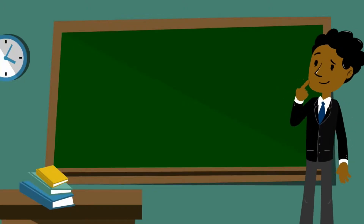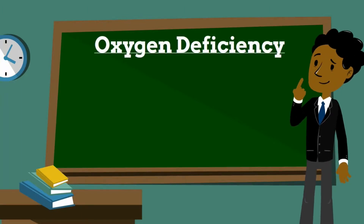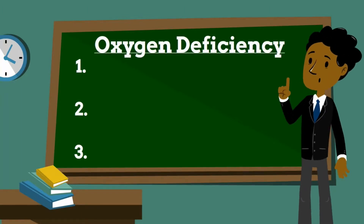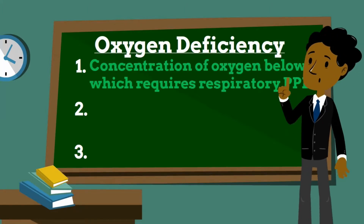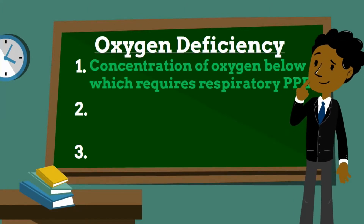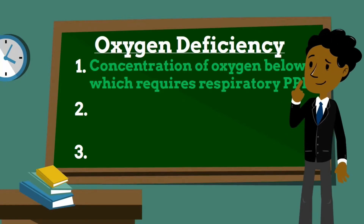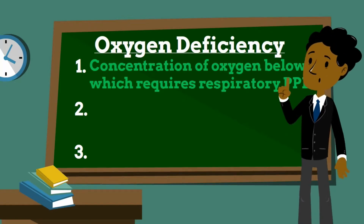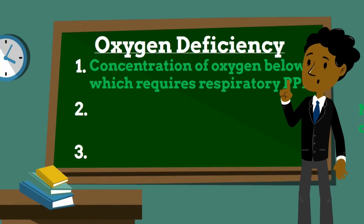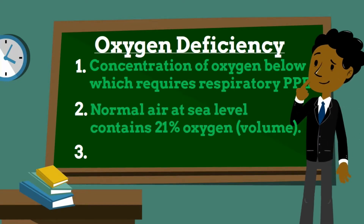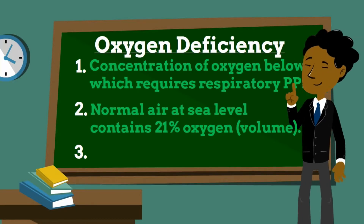Today we'll be focusing on oxygen deficient environments, which can be very dangerous for those entering or present within them. The term oxygen deficiency refers to a concentration of oxygen below which atmospheric supply and respiratory protection must be provided. This can result from displacement of normal air, which contains 21% oxygen by volume at sea level, with other gases present as well.